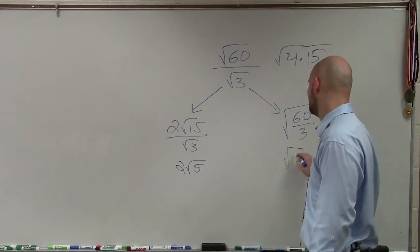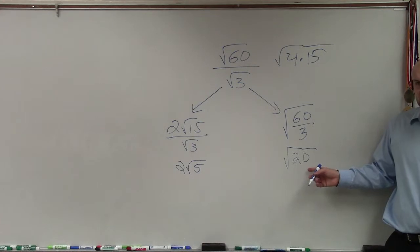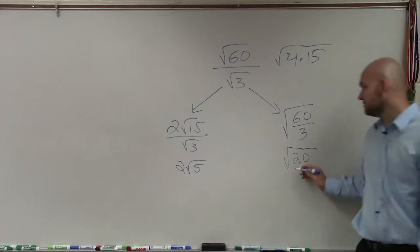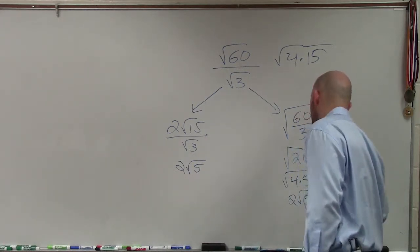20. Then, can I go ahead and simplify this? Yeah, √4 goes in there. How many times? 4 going into 20. It would be 4 times 5, which is 2√5.